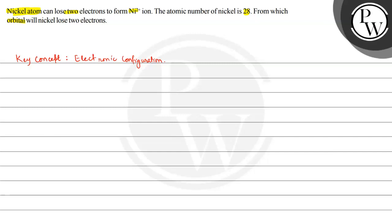If we talk about nickel's electronic configuration, the atomic number is 28. So the electronic configuration would be Argon 18, then 4s² 3d⁸.